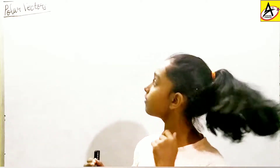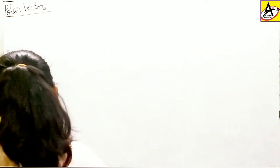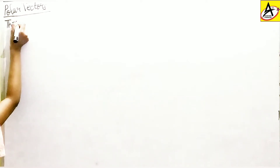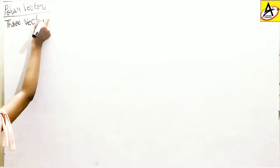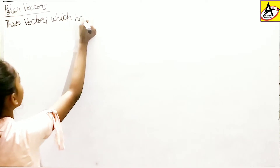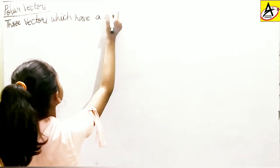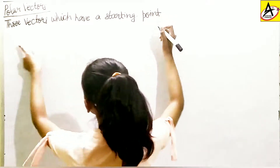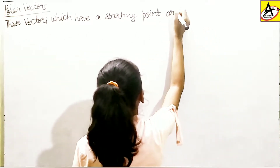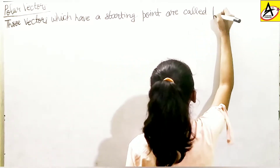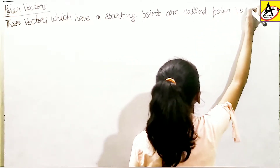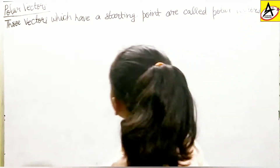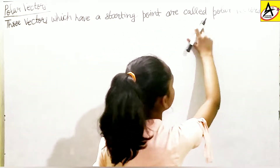First of all, we are going to discuss polar vectors. Let me write the definition and then we will read it. Those vectors which have a starting point are called polar vectors.